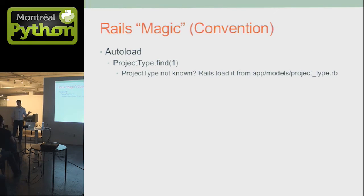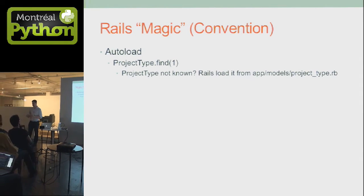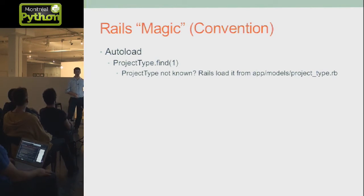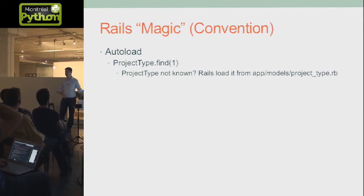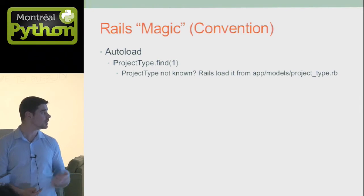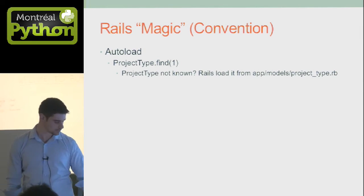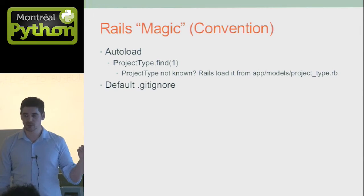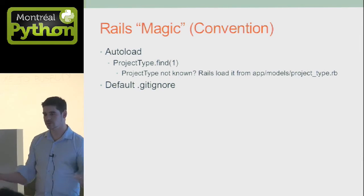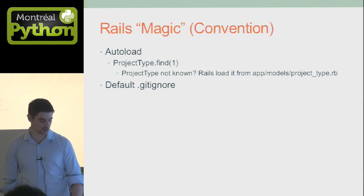Another neat thing is that the framework will autoload your classes. If you want to access ProjectType for the first time, just type ProjectType and the framework searches the right file. This is why the file is named project_type.rb — Rails knows how to find it. This is why we have the convention: you don't need import or require statements in Ruby; the framework does it for you. When you create a new Rails application, it also sets up Git by default, so you can commit directly. Everything that needs to be in .gitignore is already set up.